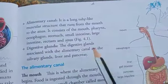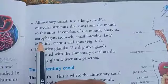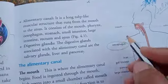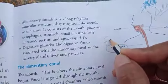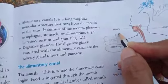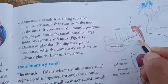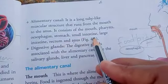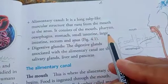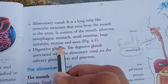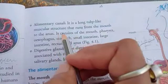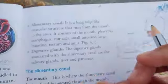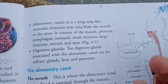pharynx, then the esophagus — also called the food pipe — then the stomach, small intestine, large intestine, rectum, and anus. So the organs that take part in the digestive system run from the mouth to the anus.